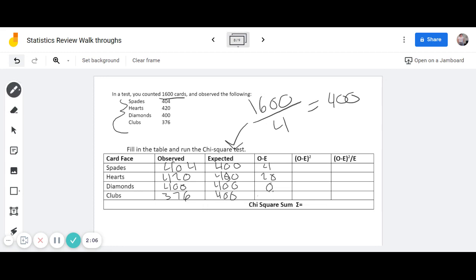It is negative 24. So then you go ahead and square those. So 4 squared is 16. 20 squared is 400. 0 squared is 0. And negative 24 squared is 576.